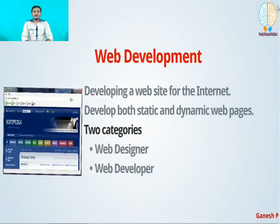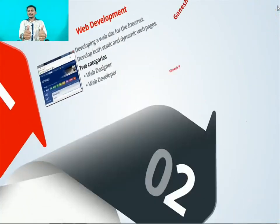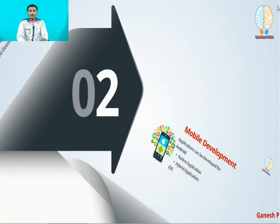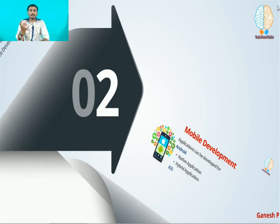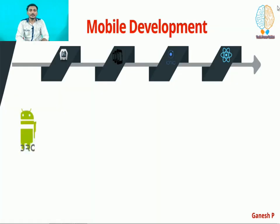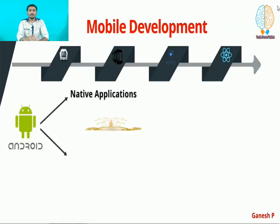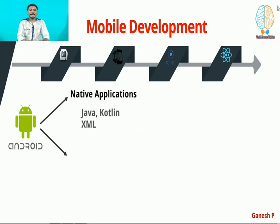That's about your web development. Your next field is mobile development. In mobile development, there will be two things: first is Android from Google and second is iOS from Apple. For Android app development, there will be two things: one is native application and another is hybrid application. For native Android app development, the language is Java and XML.